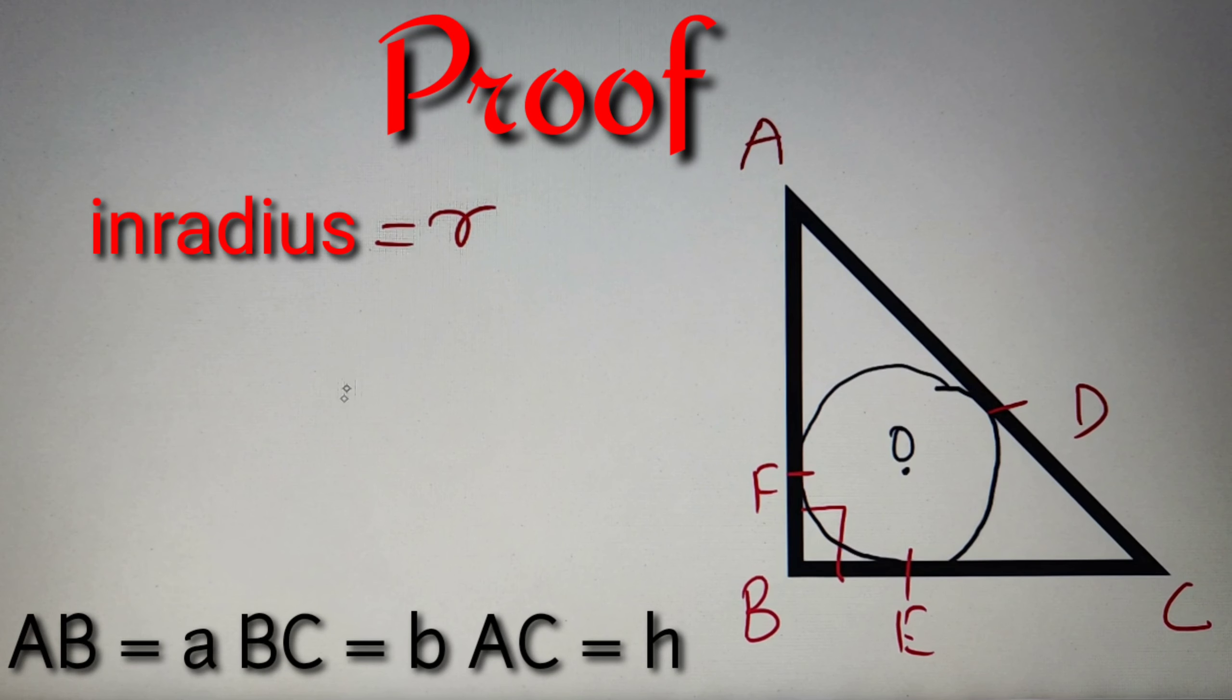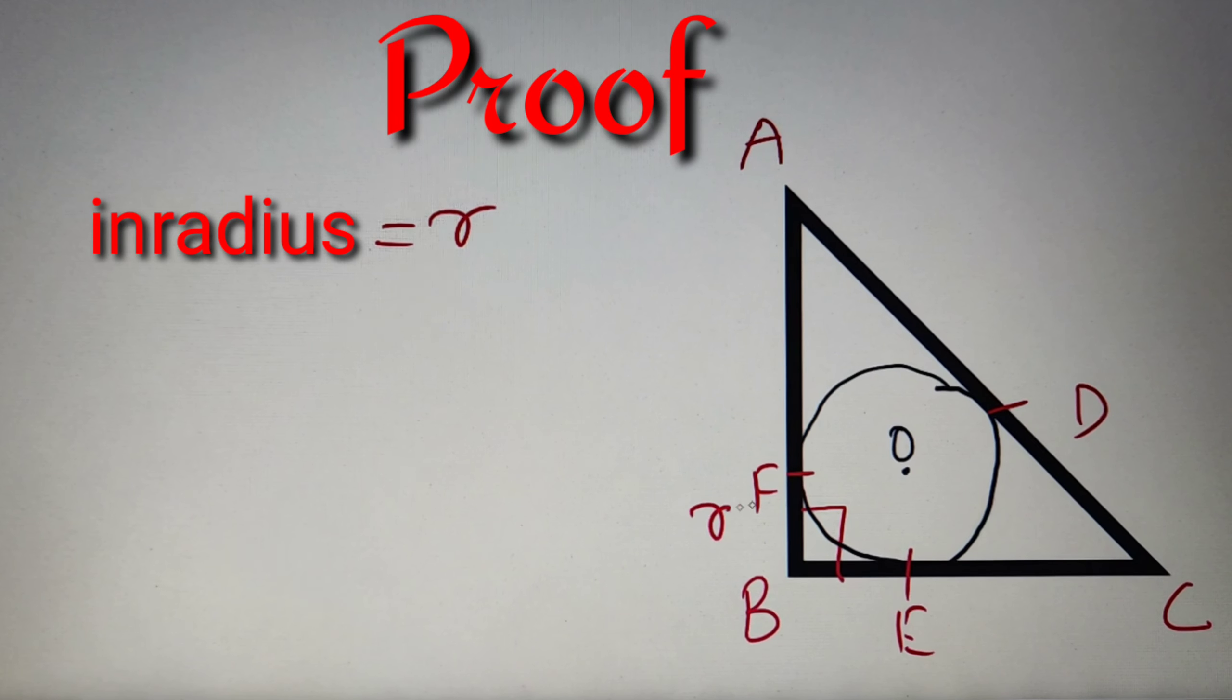So let's take the length of side AB, BC and AC as a, b and h respectively. Now we know that FB is equal to r because this distance OF is equal to r and this distance OE is also equal to r and since this forms a square then FB and BE is equal to r. So if FB is equal to r then AF is equal to a minus r and if BE is equal to r then EC is equal to b minus r. Now if AF is equal to a minus r then AD will also be equal to a minus r.